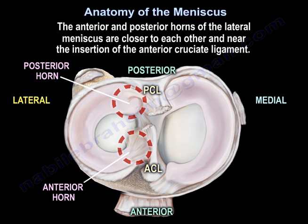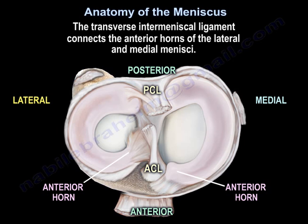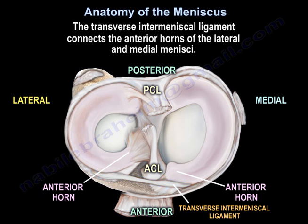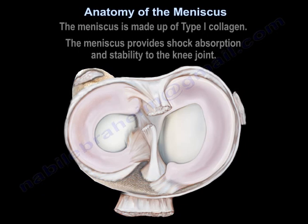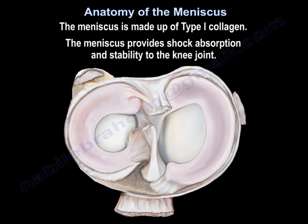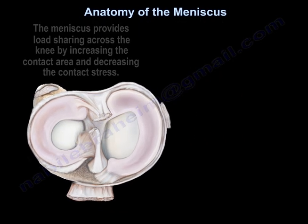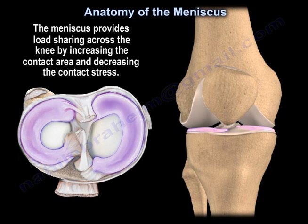The anterior and posterior horns of the lateral meniscus are closer to each other and near the insertion of the anterior cruciate ligament. The transverse intermeniscal ligament connects the anterior horns of the lateral and medial menisci together. The meniscus is made up of type 1 collagen and provides shock absorption and stability to the knee joint, as well as load sharing by increasing contact area and decreasing contact stress.